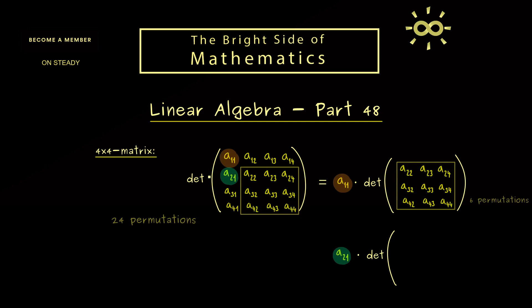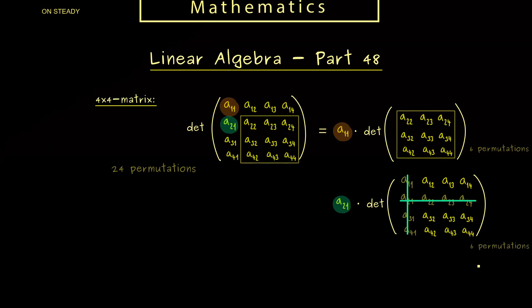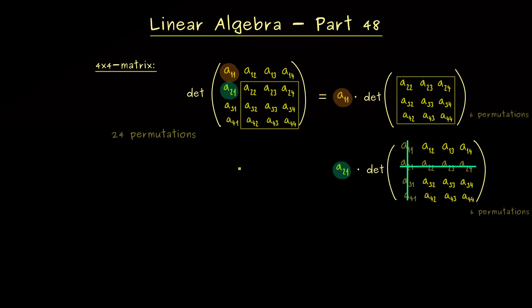Hence, we could denote the whole thing here by simply crossing the corresponding column and the corresponding row. Therefore, now we just want to calculate the determinant of the remaining 3×3 matrix here. And then as before, we get again 6 permutations here.